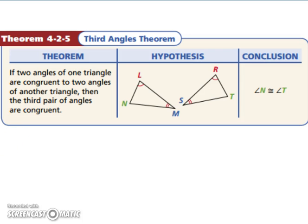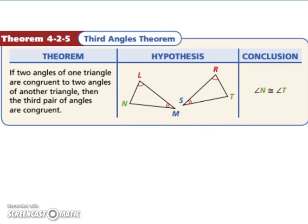Let's look at the third angles theorem. If two angles of one triangle are congruent to two angles of another triangle, then the third pair of angles are congruent — because all angles must add up to 180 degrees.